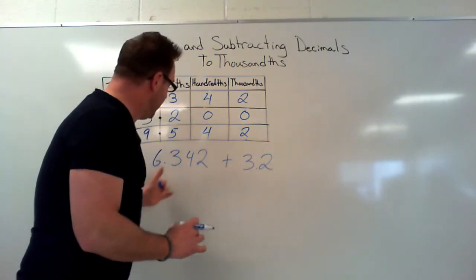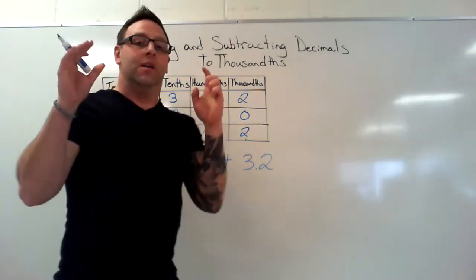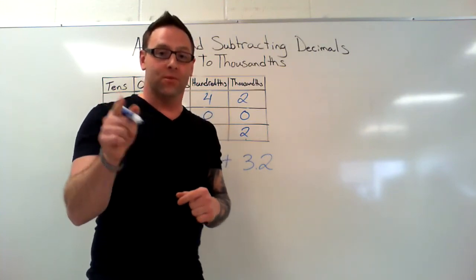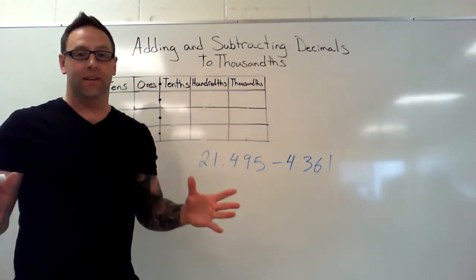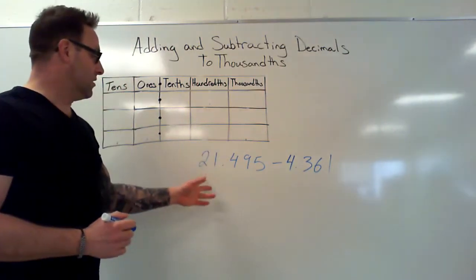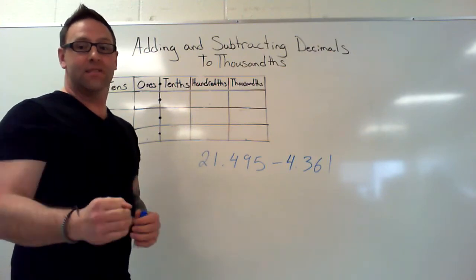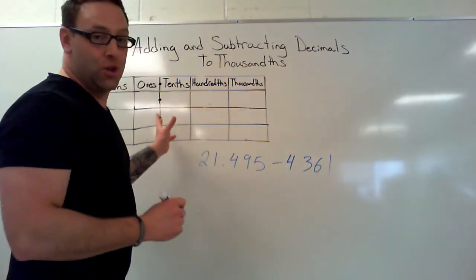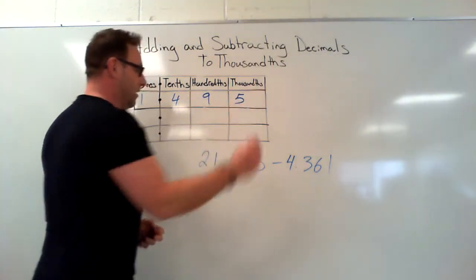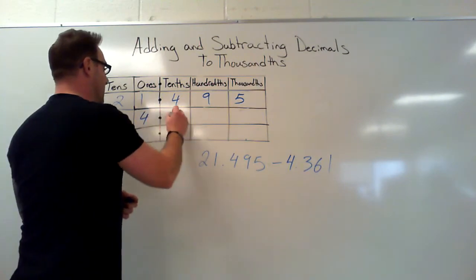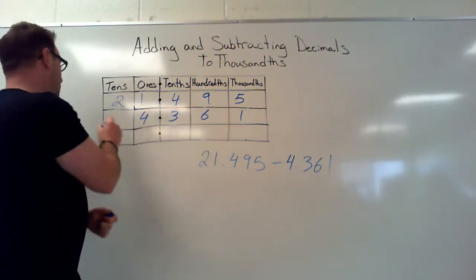Adding up these two numbers with different place values is just a piece of cake — easy peasy lemon squeezy. Now let's talk about subtracting decimals. Subtracting decimals is exactly the same as subtracting any other numbers. Let's look at twenty-one point four nine five minus four point three one six. Just like in adding, our first step is to line up the decimal points. Let's use our place value chart — first number: twenty-one point four nine five, second number: four point three six one. Now we've got our decimal points lined up.